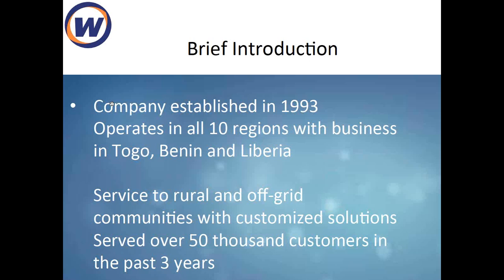Our strategy has been to recognize that initially solar systems going to rural areas were beyond people's financial reach. So we developed customized small systems that people can afford — typically 50 to 100 watt solar systems, pico systems of about 10-20 watts, and solar lanterns. These are basically what we have offered to the market over the years.